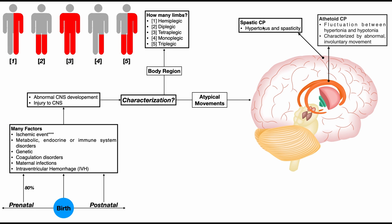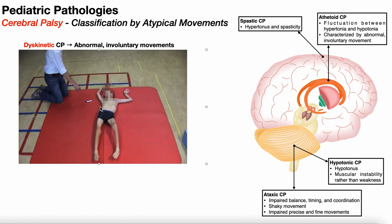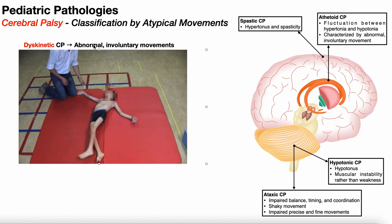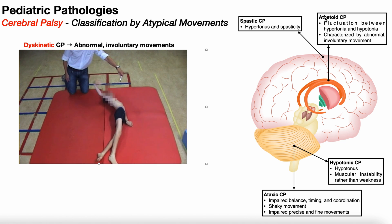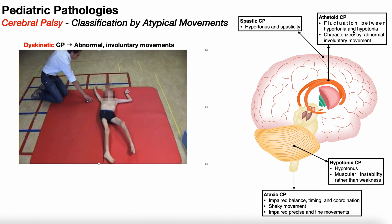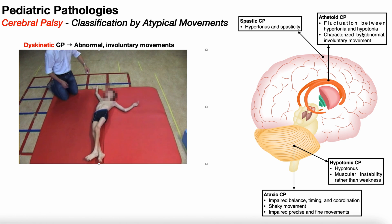The next type is athetoid CP, sometimes called dyskinetic CP. Notice that damage is now to the basal nuclei. For somebody with athetoid CP, there are fluctuations between hypertonia and hypotonia, characterized by abnormal involuntary movements. In dyskinetic cerebral palsy, these fluctuations between hypertonia and hypotonia tend to occur pretty quickly.